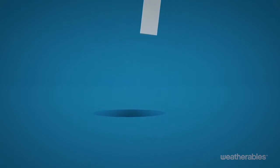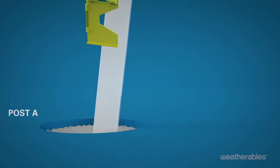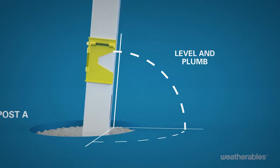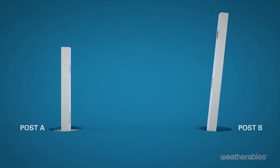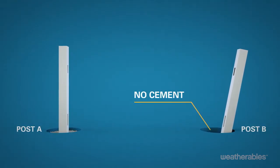Now you can start by installing post A in the first hole with concrete around the post. Be sure to level and plumb this post for proper placement. It's important to have post B sitting in the adjacent hole but not cemented so you can assess alignment.